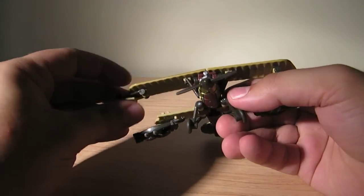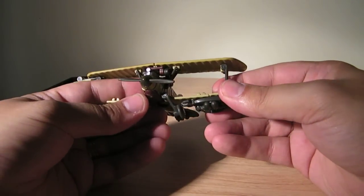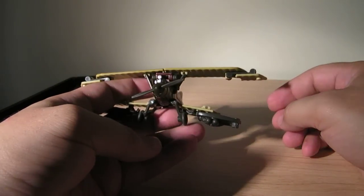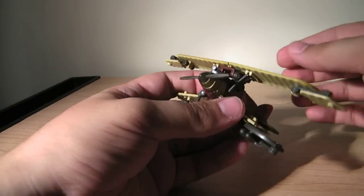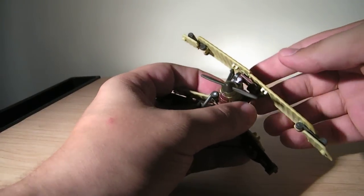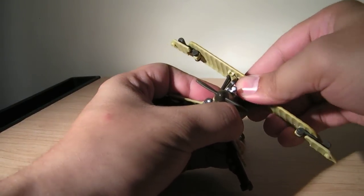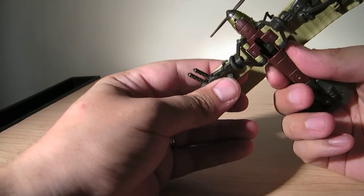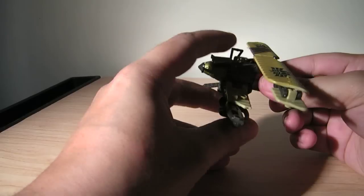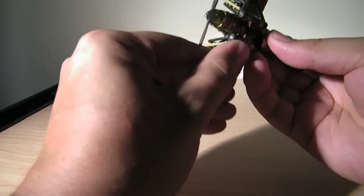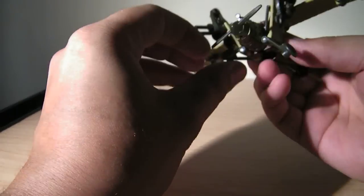To transform, you want to go ahead and pull these bits out, unpeg them and fold them up like that. Then this whole wing assembly detaches from these posts and swings backwards down like that. You want to bring these panels up, snap these onto these struts, bring the wheels down a little bit.